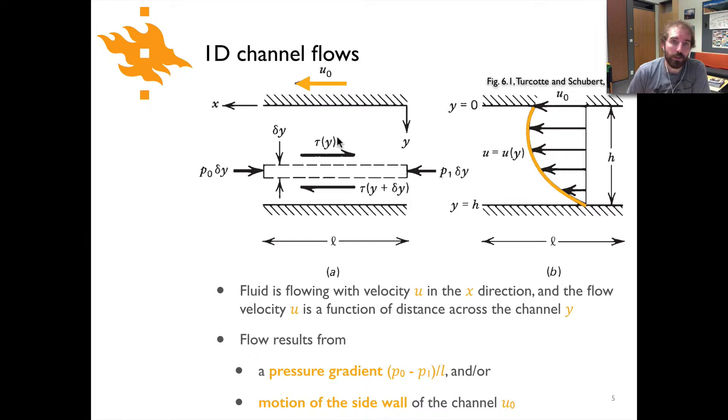The fluid that sits within this channel will flow with some velocity based on basically two things. A pressure gradient would exist from maybe one side of the channel to the other. The pressure gradient would be the change in pressure p0 minus p1 divided by the length of the channel. That's simply the change in pressure along the channel length. The channel in this case is length l.